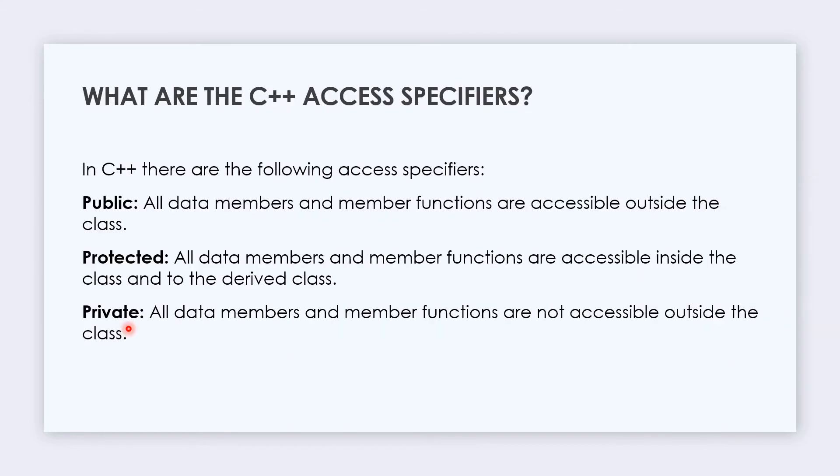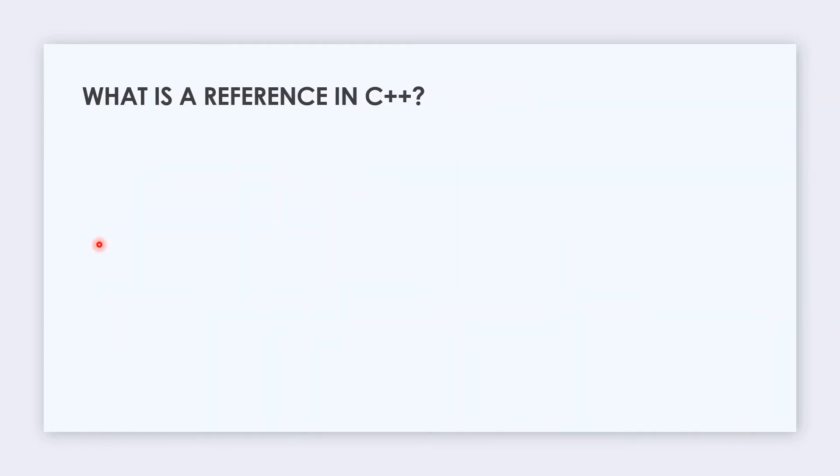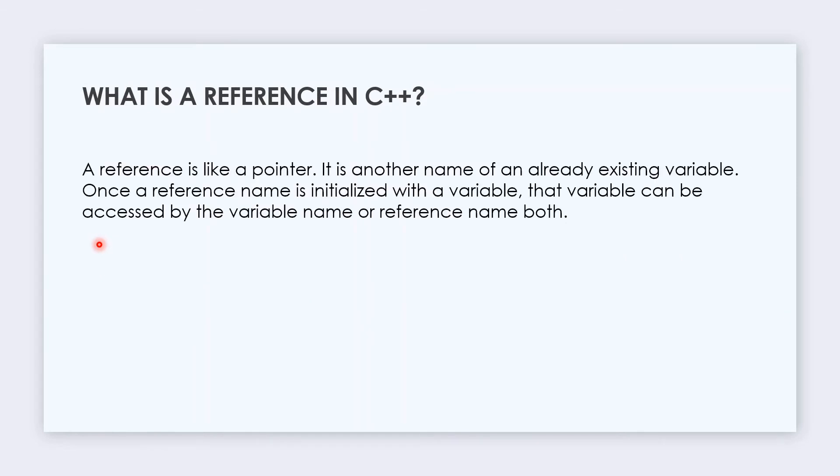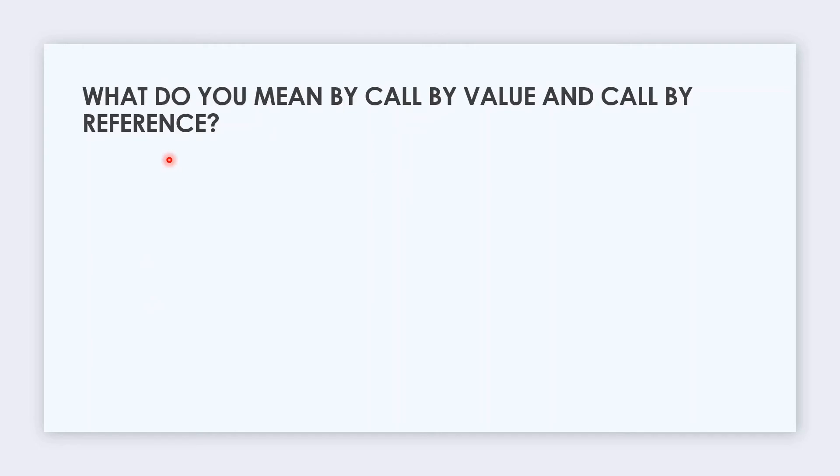The next question is: What is reference in C++? A reference is like a pointer. It is another name of an already existing variable. Once the reference name is initialized with a variable, that variable can be accessed by the variable name or the reference name both. Let's say int x equals 10 and int ampersand ref equals x. That means if we print ref, this will also print 10 because the address of ref stores the value of x, which is 10.